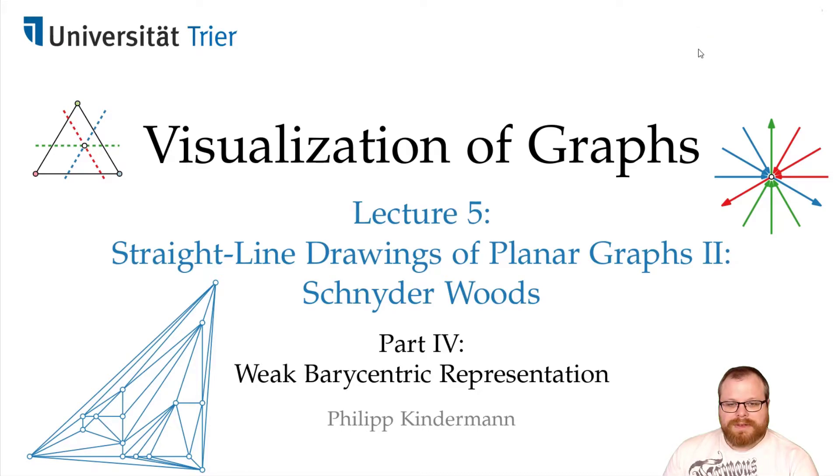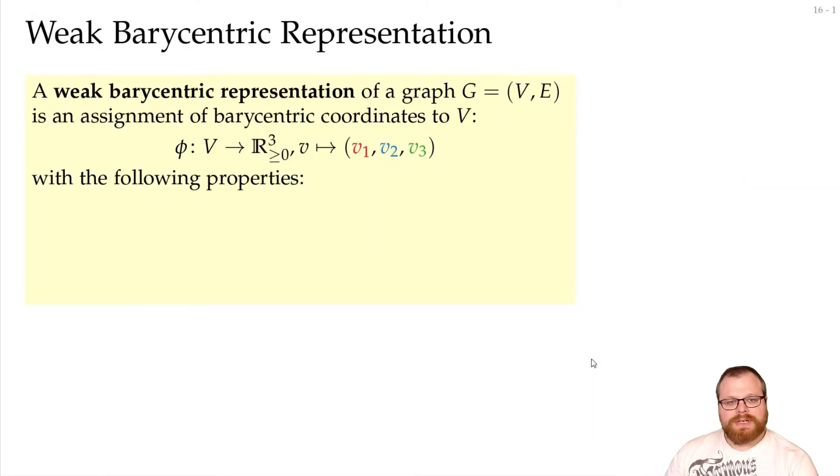In order to reduce the size of the grid, we have to relax the constraints of our barycentric representation and find a so-called weak barycentric representation. The definition is almost the same as before, so we still want to find barycentric coordinates that sum up to 1, and we have some constraint for every edge and every other vertex.